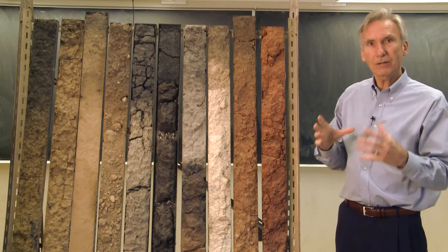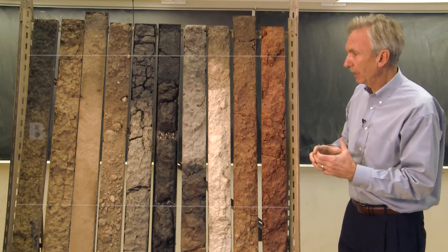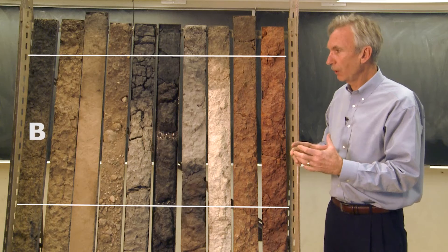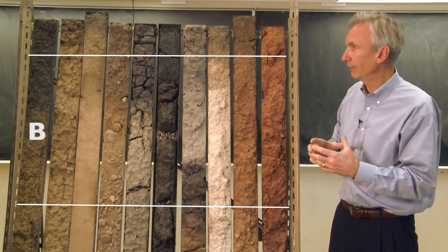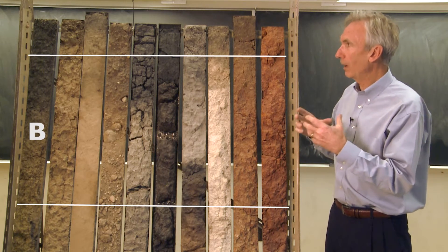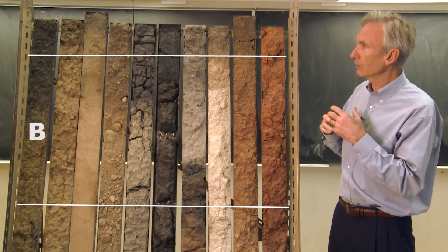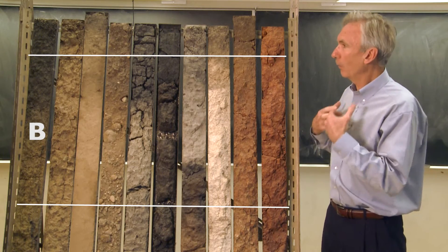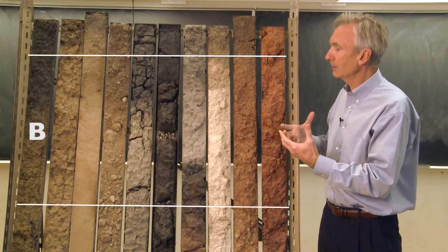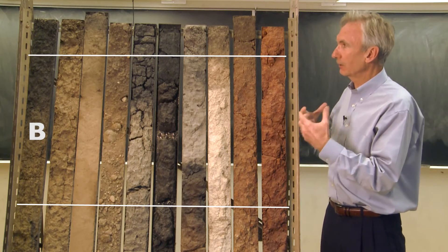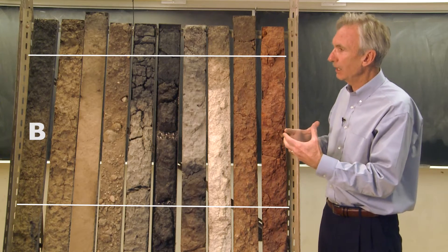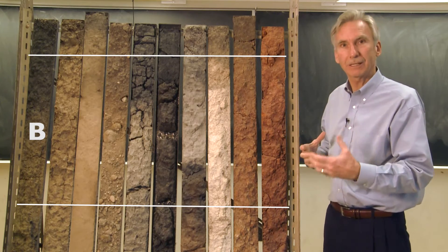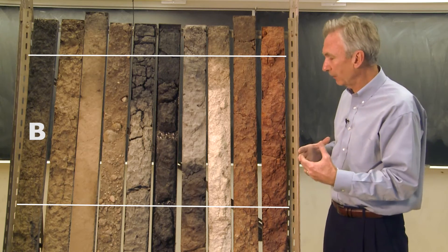The B horizon is called the subsoil, and the subsoil is where everything has accumulated. As soils weather, things move out of the A horizon and accumulate down in the B horizon.